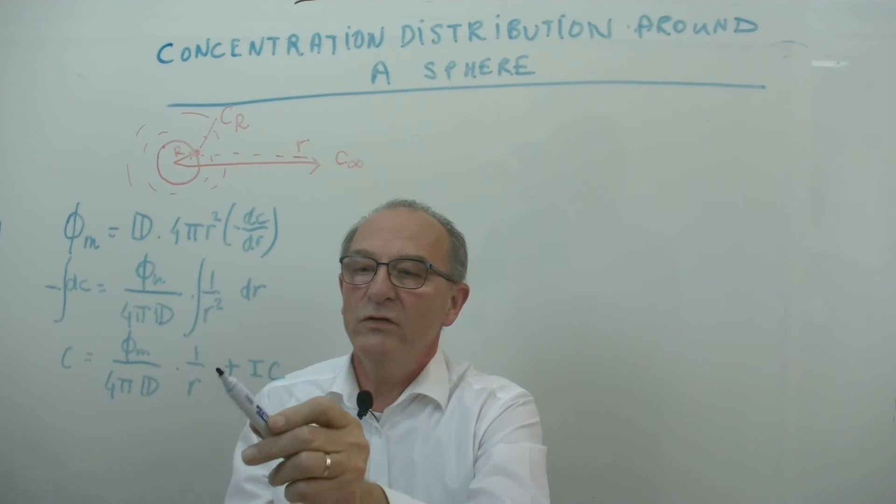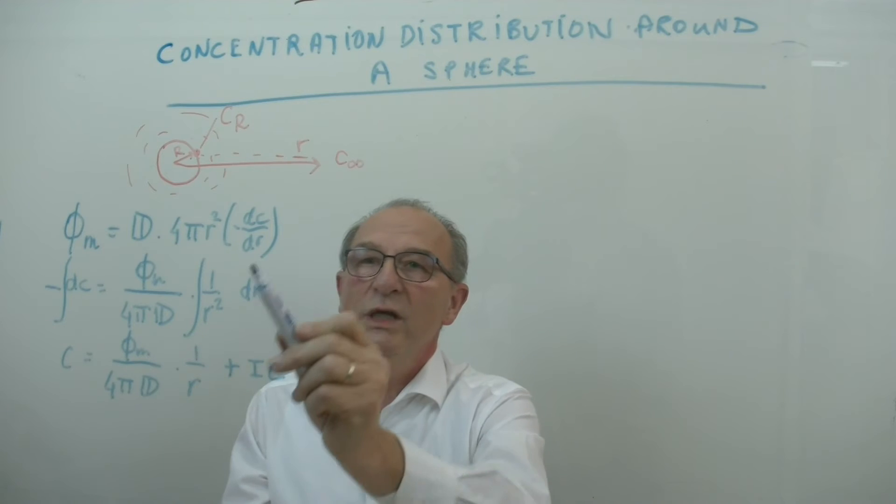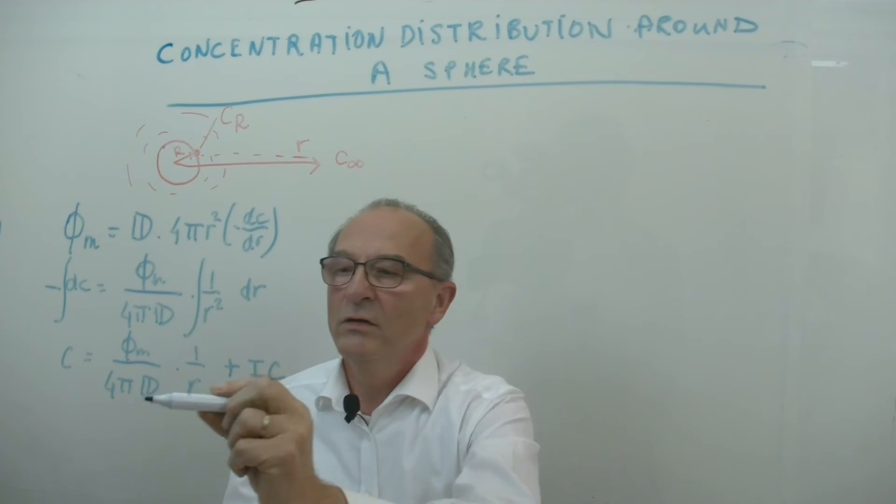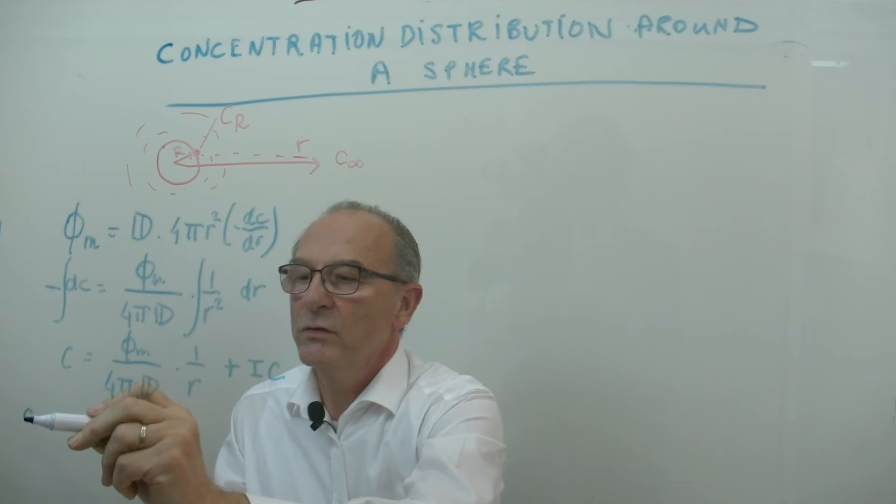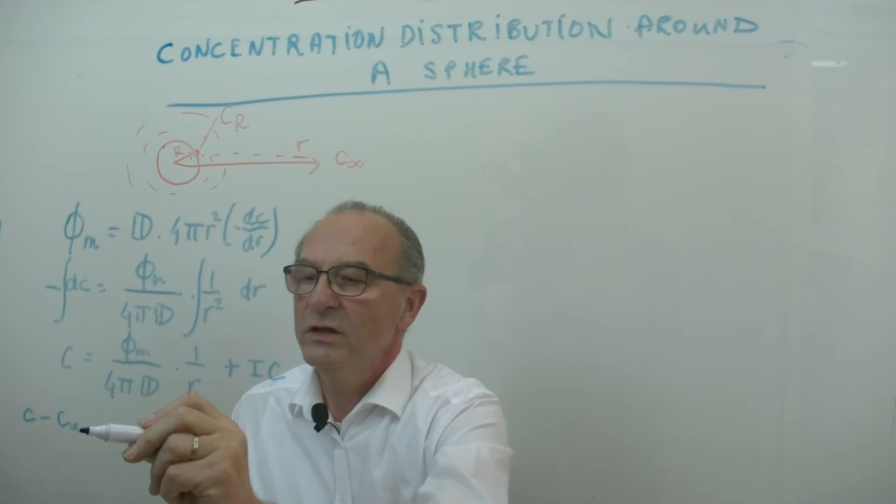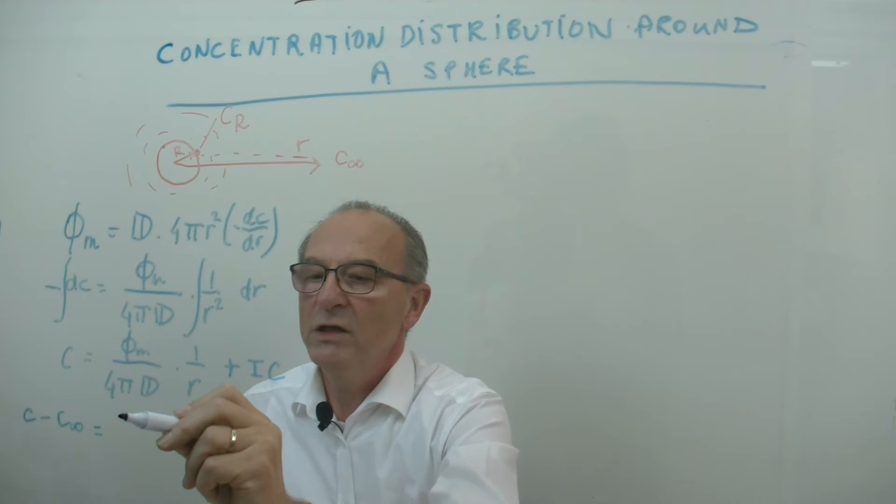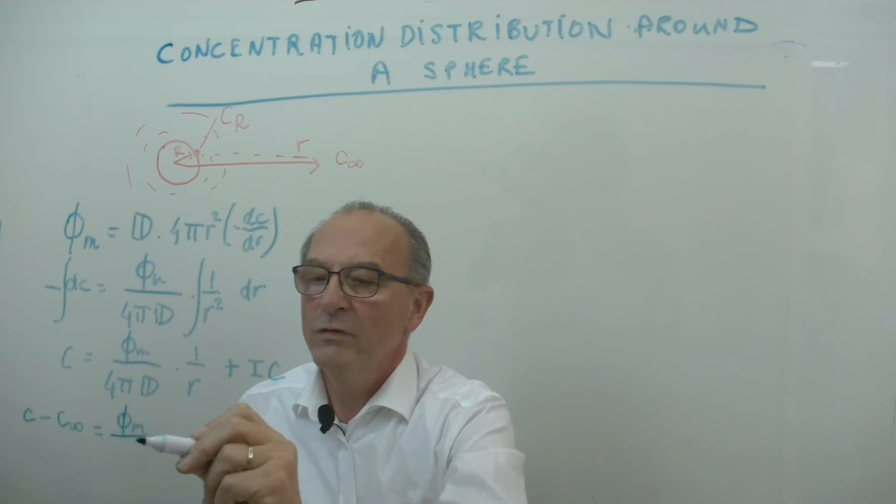Well if this term goes to infinity we get c infinity. So in this case we could write down c minus c infinity is equal to phi m divided by 4 pi multiplied by d, 1 over R.